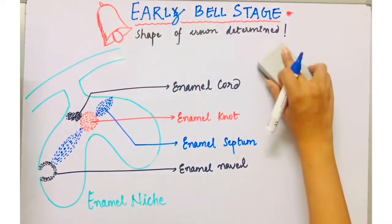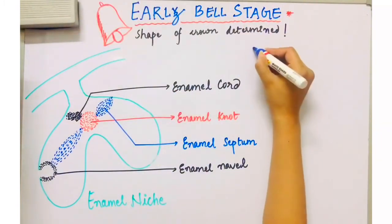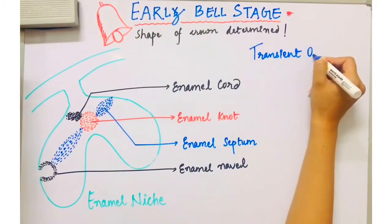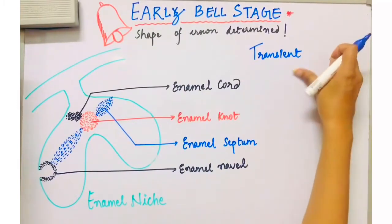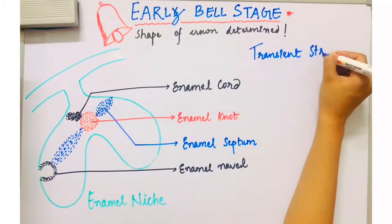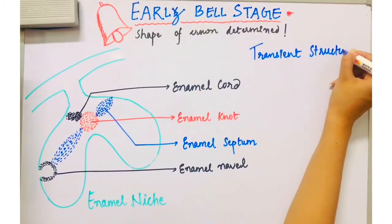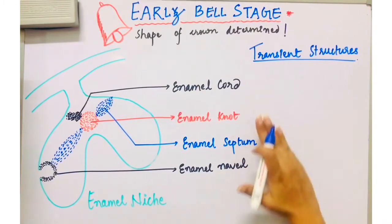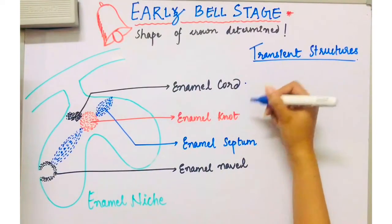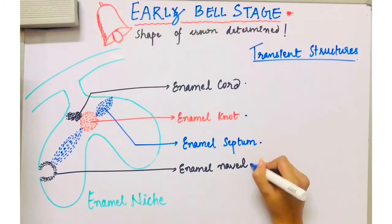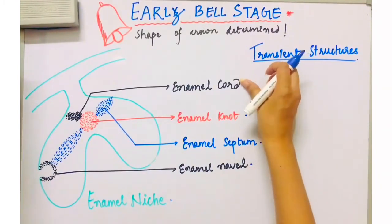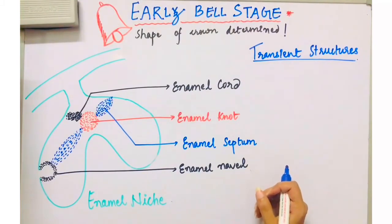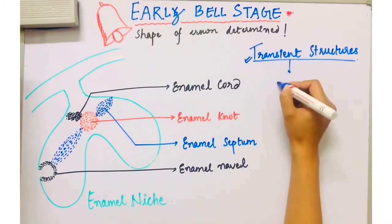In this phase, there are some transient structures which are seen in the enamel organ. There are five transient structures: enamel cord, enamel knot, enamel septum, enamel navel, and enamel nikke. They are called transient structures because they disappear.